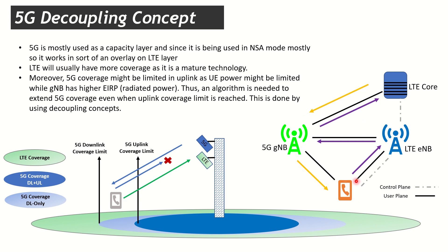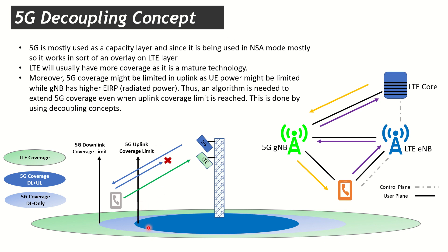So downlink traffic flows through 5G and uplink traffic flows through LTE. This effectively increases our 5G coverage footprint, maintaining downlink data on 5G — which is the most important part, since the main capacity added in 5G is for downlink. As an example, a user watching YouTube gets the video data on 5G, while TCP acknowledgements are sent over LTE.